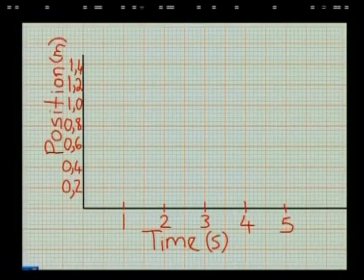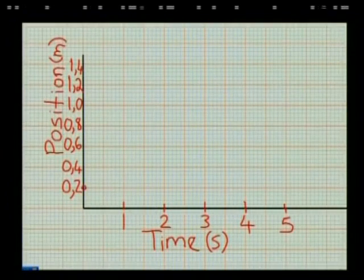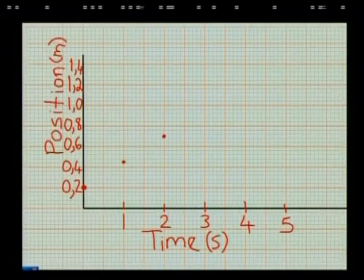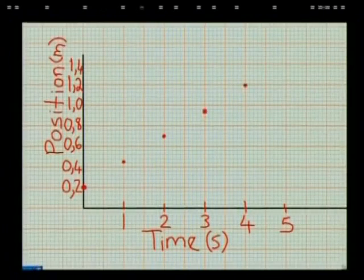I will use two blocks to represent each second on the time axis. At the start, time equals 0 seconds and the trolley is in its original position of 0.2 meters. Therefore, I can mark the position of the trolley here on the position axis. After one second, the trolley moved forwards by 0.25 meters, so I can plot its position at one second and 0.45 meters on the graph. At two seconds the trolley is at 0.7 meters. At three seconds, the position of the trolley is 0.9 meters. And at four seconds, 1.2 meters.